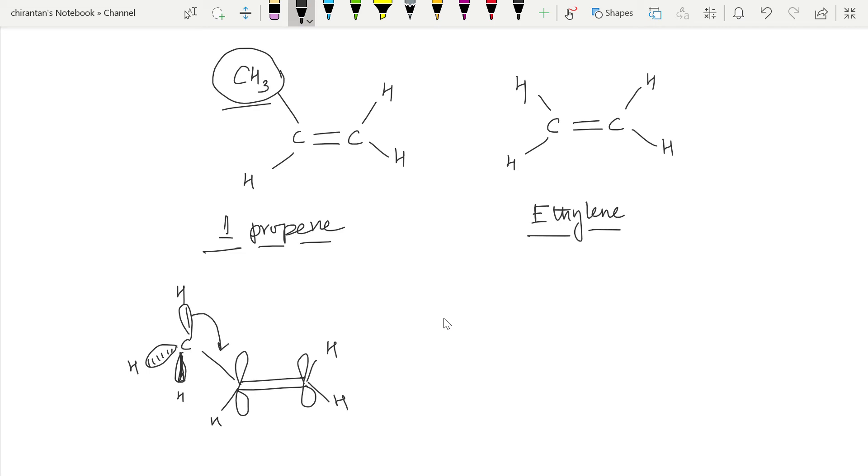So this sp3 hybridized CH bond can form a kind of conjugation with this pi orbital, and this is called hyperconjugation. If I draw the conjugation or the resonance structure, it will look like this.